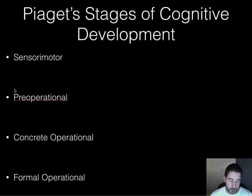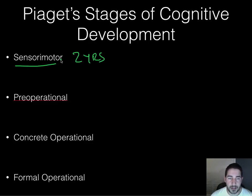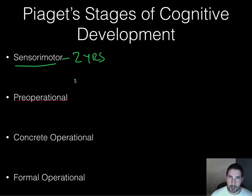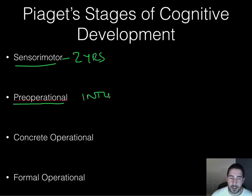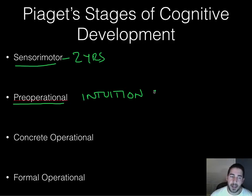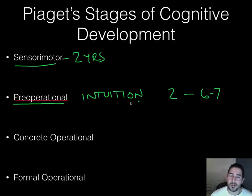Finally, Piaget's stages of cognitive development — we'll go through these quickly. Stage one is sensorimotor, from birth to about two years. This is where you take in the environment basically just with your senses — taste, touch, feel, hearing. Stage two is preoperational, from about two to six or seven. You use a lot of intuition and try to make sense of the world through that. You don't reason or think logically very well yet.